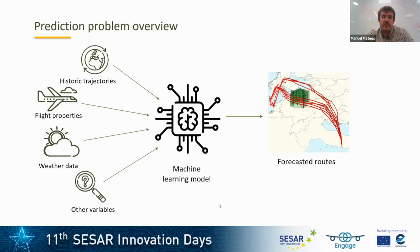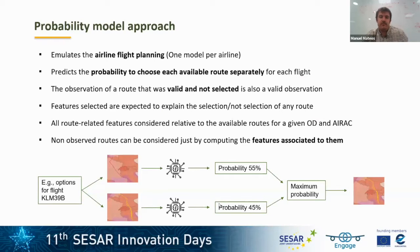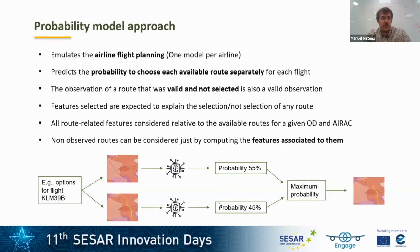What we have done is take the historic of these routes, use some properties from the flight, weather data, and other variables, and train machine learning models able to rank routes. We have called this the route probability model. This model is intended to replicate the same process that the airline follows during flight planning. Conceptually, we generate one different model per airline, predicting the probability of choosing each available route for each OD pair independently.